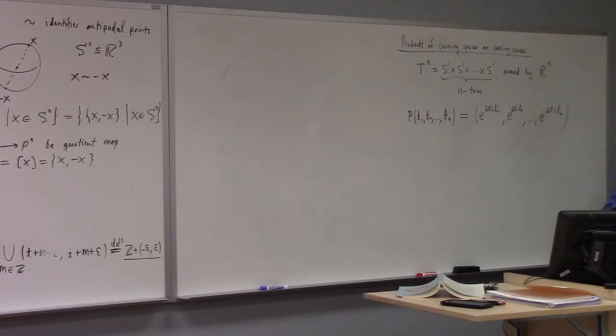You could generalize this if you had a space X₁ covered by E₁, X₂ covered by E₂, X₃ covered by E₃, and so forth. You just form the Cartesian product of the covering maps - let p be p₁ × p₂ × p₃ and so forth. The Cartesian product of the covering maps would itself be a covering map for the product.